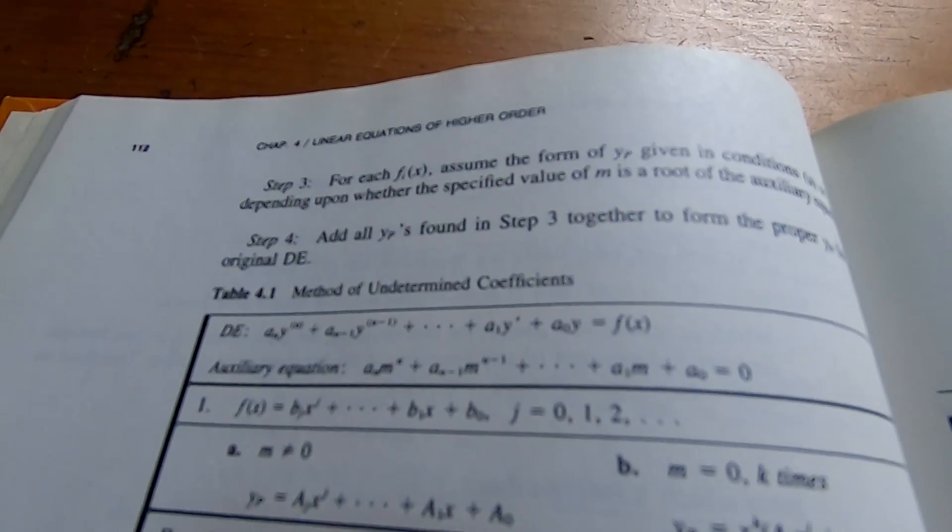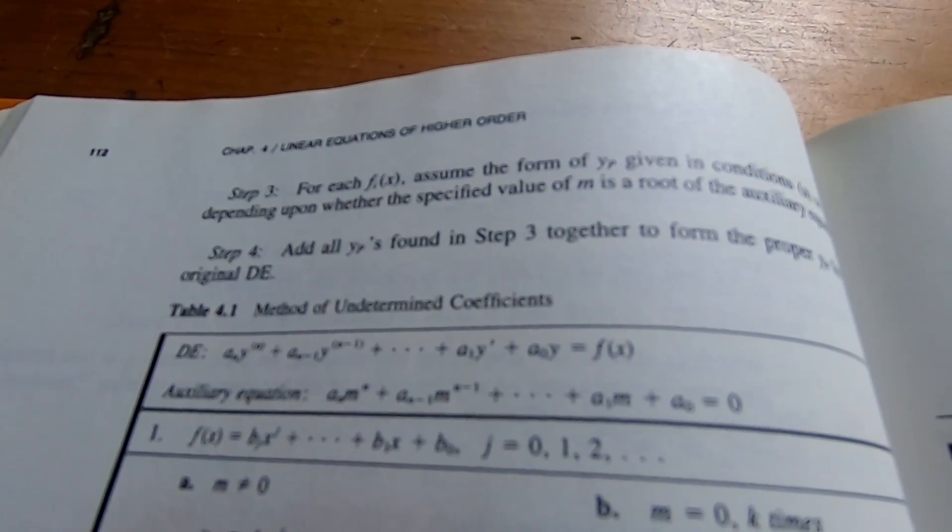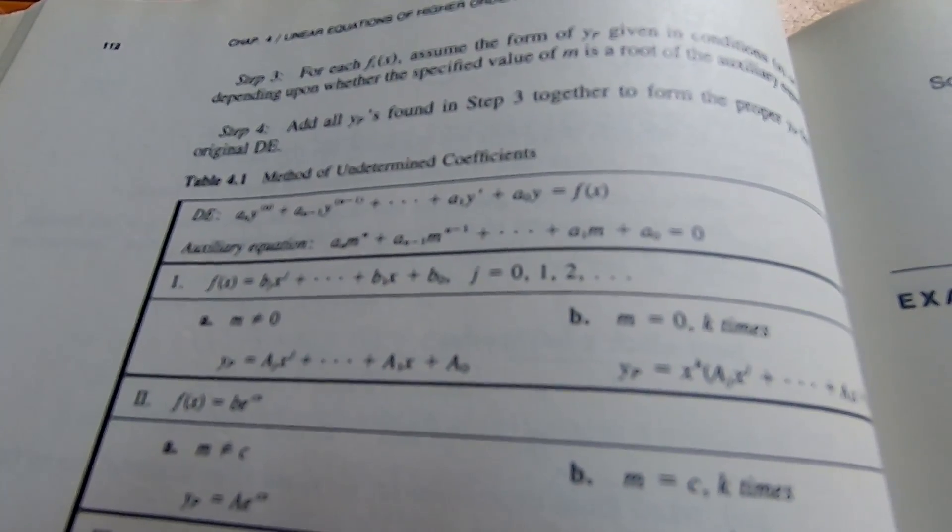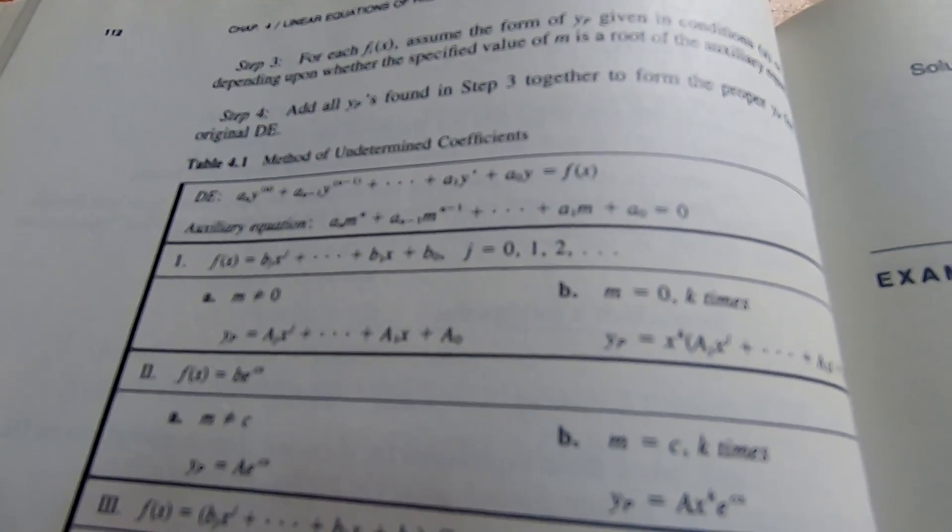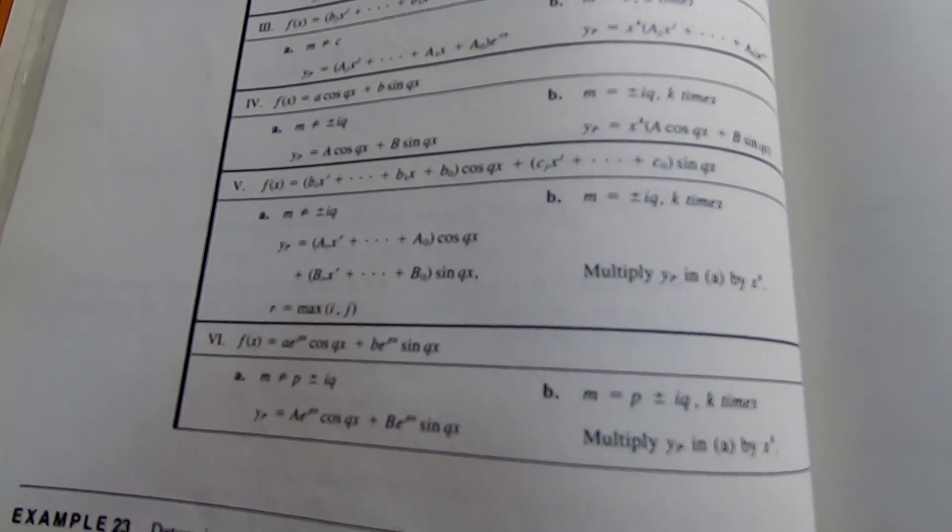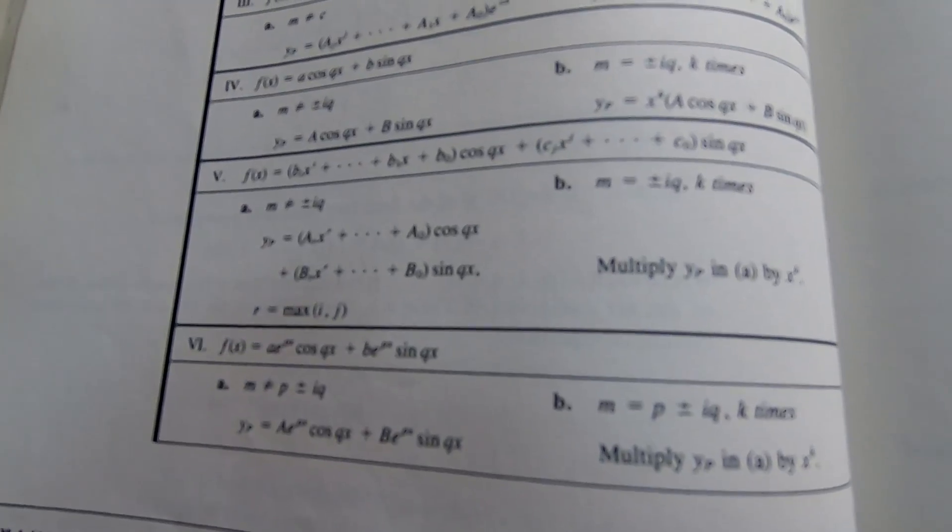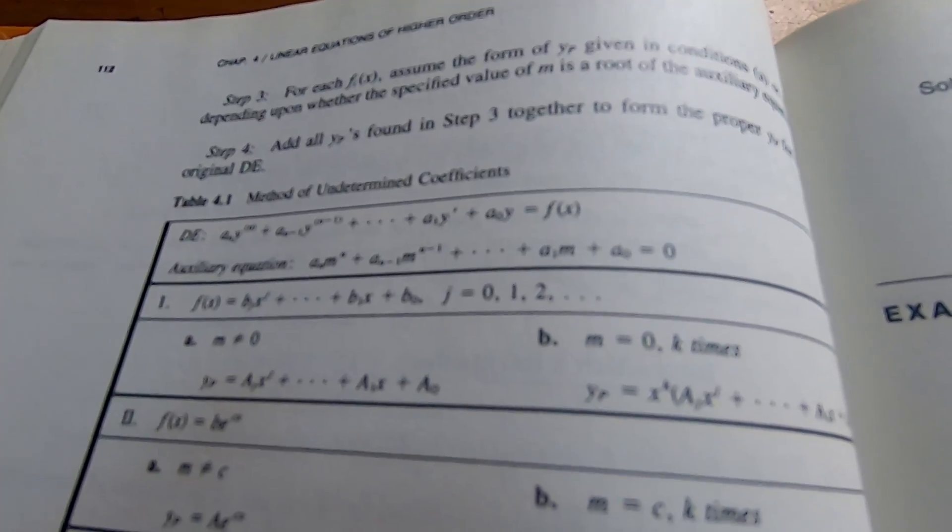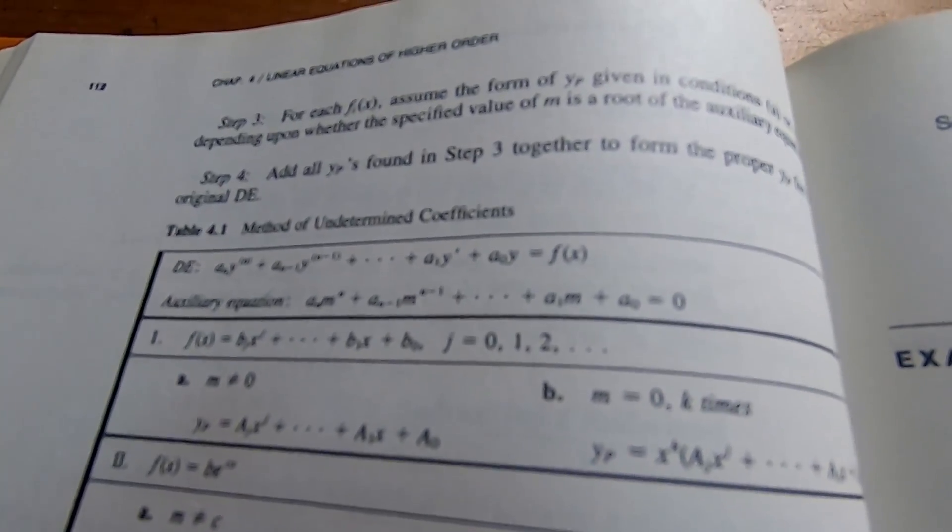This is the section on the method of undetermined coefficients. This is the part where Andrews is trying to explain to the reader how to guess the particular form, the form of the particular solution rather y sub p. This is a bunch of examples in class when I teach this. And he has made a table here which is pretty good. I mean it's better than no table. So my hat goes off to Mr. Andrews for providing this table which really helps people I think.